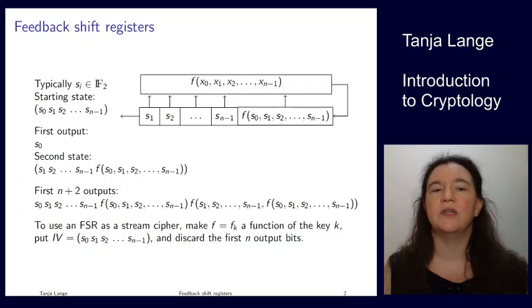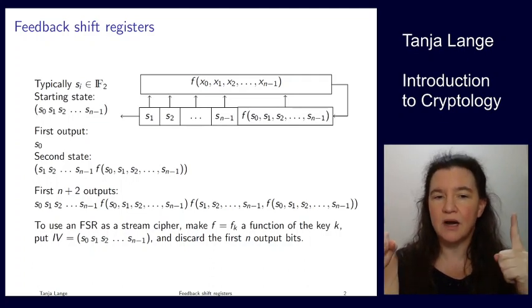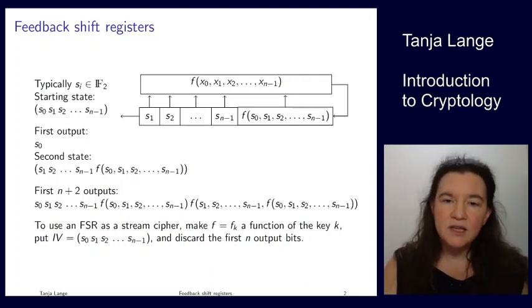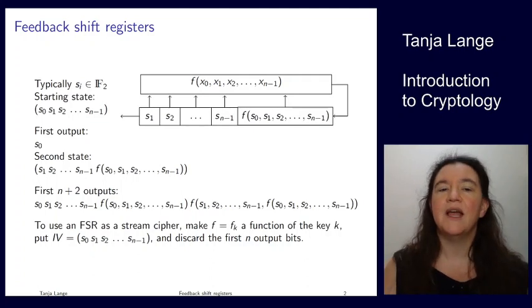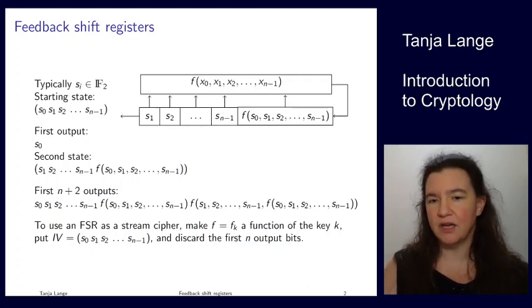And of course, I just showed that the first n output bits are exactly this IV. And you have to send the IV along, but you should not XOR your message with it. We have learned how to encrypt with a stream cipher and you will just XOR your message with it. And so you have to discard these first n output bits.